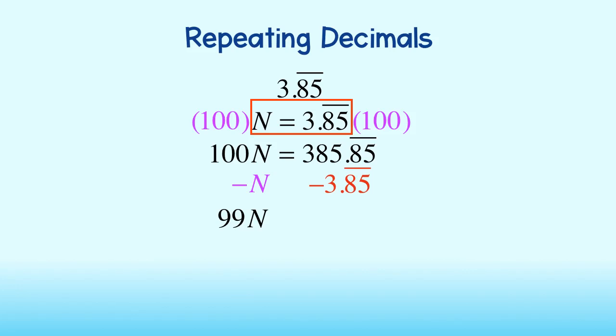385.85 repeating minus 3.85 repeating is equal to 382. Lastly, we can divide both sides by 99. We are left with N is equal to 382/99. Written as a mixed number, we get 3 and 85/99. We've just found the fractional form of our decimal.